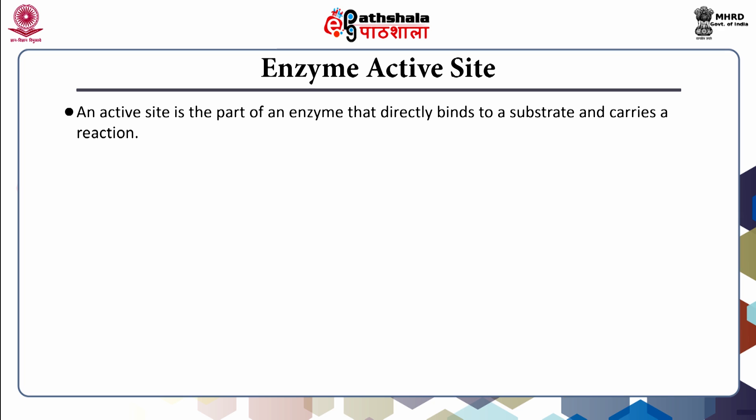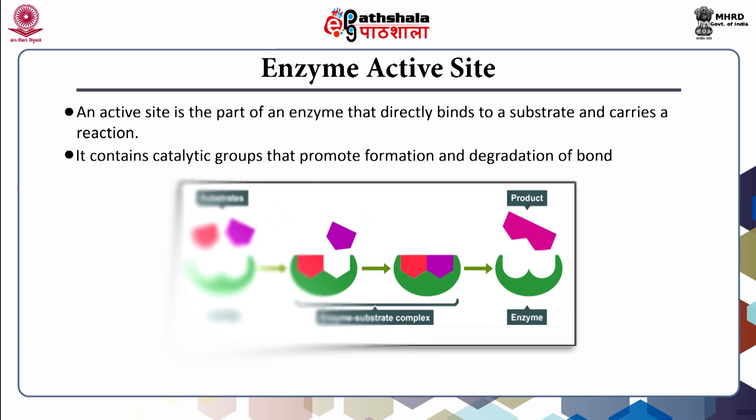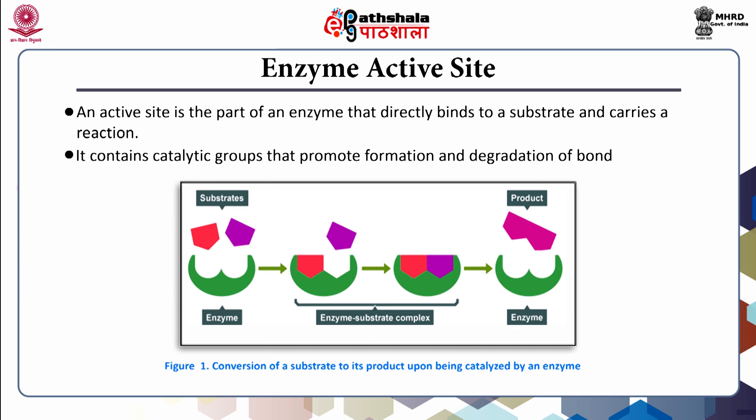The active site is the part of an enzyme that directly binds to a substrate and carries out the reaction. It contains amino acids that promote formation and degradation of bonds. The amino acid residues are called the catalytic groups. Active sites are formed when the tertiary structure of a protein forms pockets or clefts where the ligand or potential molecules or small atoms can bind to the protein molecule. It is important to note that only molecules with appropriate shape and appropriate groups can bind to the active sites of a protein molecule. Figure 1 shows the mechanism of action that involves conversion of a substrate to its product upon being catalyzed by an enzyme.